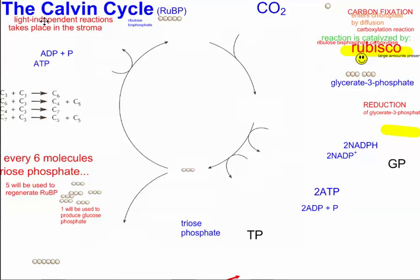Previously, the light-dependent reactions took place inside the actual thylakoids and the thylakoid membrane in the thylakoid space. And remember, the things that came out of the light-dependent reactions were primarily this molecule here, NADPH and ATP.